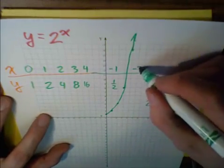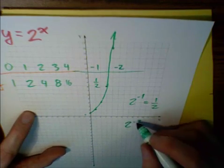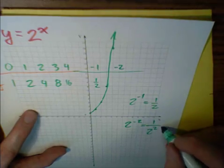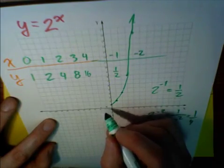How about negative two? Two to the negative two, again, we take the reciprocal of the base, is one over two squared, or one-fourth. That's this point right here.